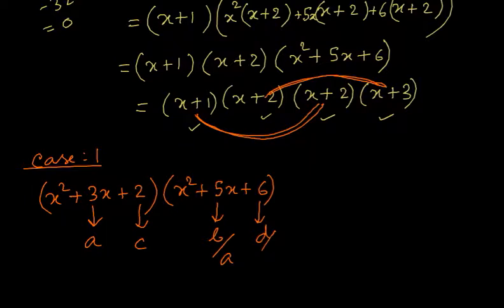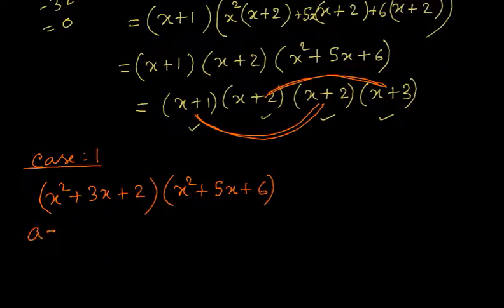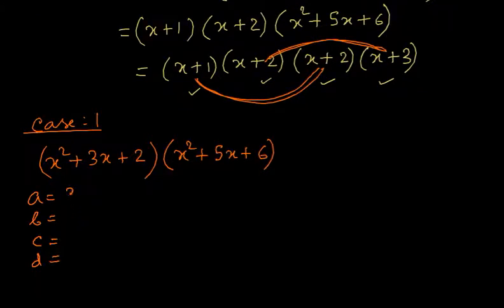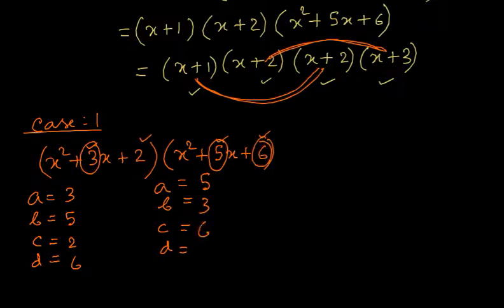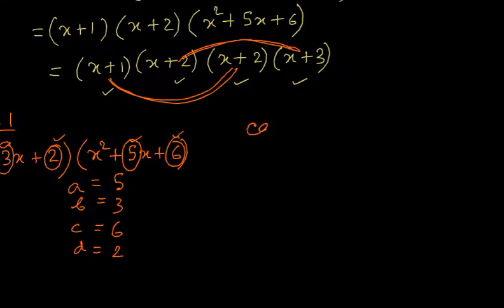Or it can be the other way also. So from here the values of A, B, C, D can be written as: one set of values — A = 3, B = 5, C = 2, D = 6. Another set of values: A = 5, B = 3, C = 6, D = 2.